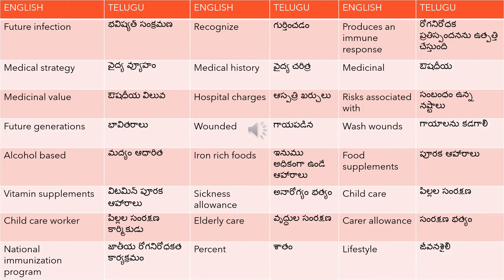Medical strategy is 'vaidya vyuham'. Medical history is 'vaidya charitra'. Medicinal is 'aushadhiya', as in medicinal value — 'aushadhiya viluvaum'. Hospital charges is 'aspatri kharchulu'. Risks associated with is 'sambandham unna nashtalau'.